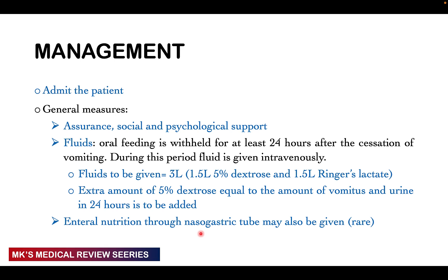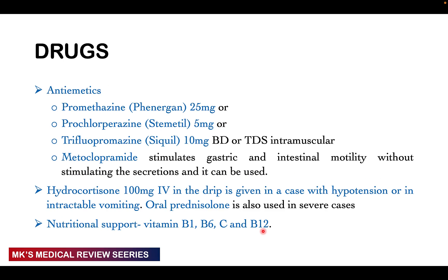Enteral nutrition through a nasogastric tube may be considered, though it is rarely needed as most women are able to feed. Consider antiemetics: promethazine (Phenergan) 25 mg, prochlorperazine 5 mg. Metoclopramide can stimulate gastric and intestinal motility without stimulating secretions and can be used. Hydrocortisone 100 mg IV in a drip can be given in cases of hypotension or intractable vomiting, and oral prednisolone can be used in severe cases. Nutritional supplementation with vitamins B1, B6, vitamin C, and B12 is also important.